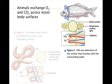Gills are extensions or outfoldings of the body surface specialized for gas exchange. A fish has a set of feather-like gills on each side of its head. Oxygen diffuses across the gill surfaces into capillaries, while carbon dioxide diffuses in the opposite direction out of the capillaries and into the external environment.